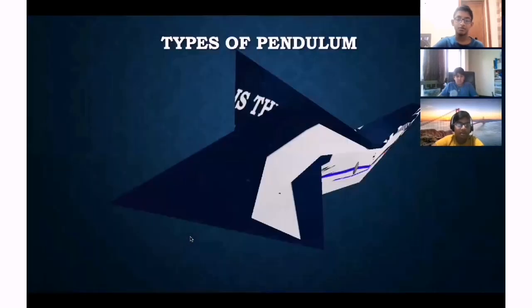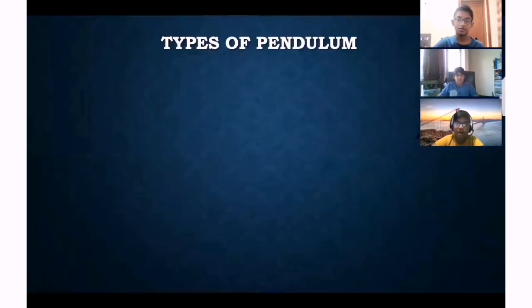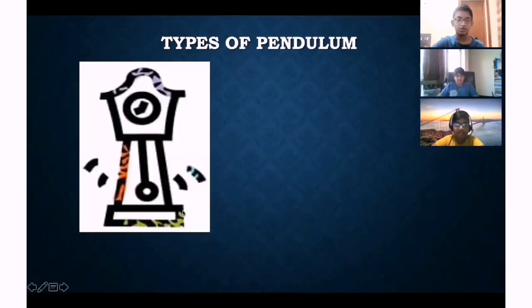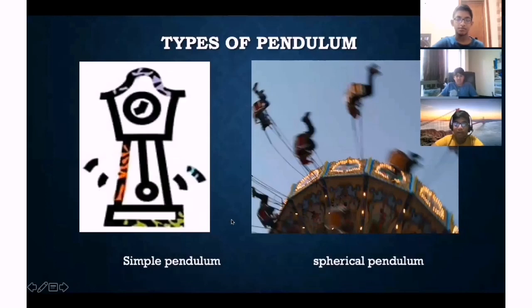Types of Pendulum: A simple pendulum only moves back and forth, like the swings on a playground swing set. A spherical pendulum is one in which the bob not only moves back and forth but also in a circular motion.